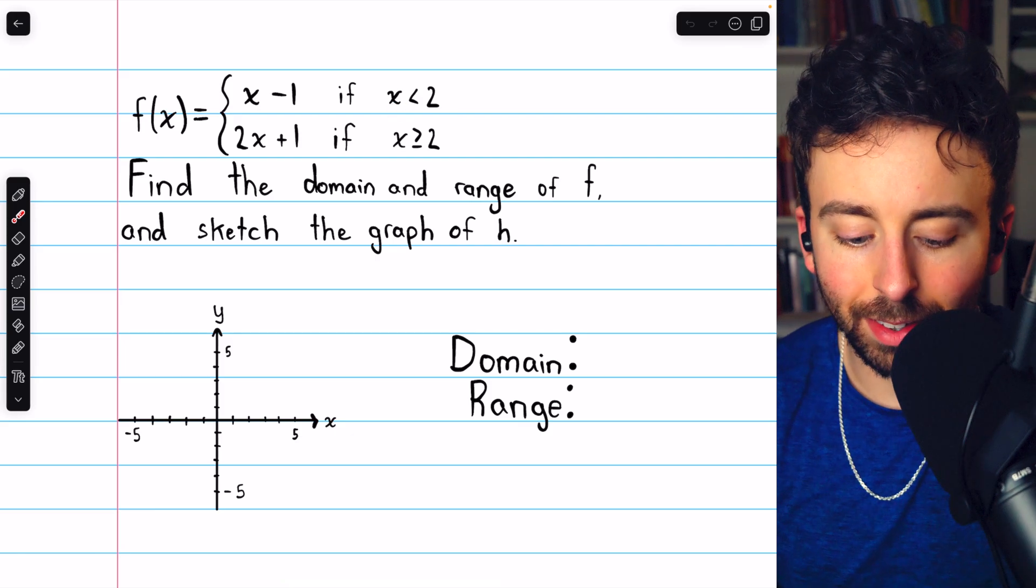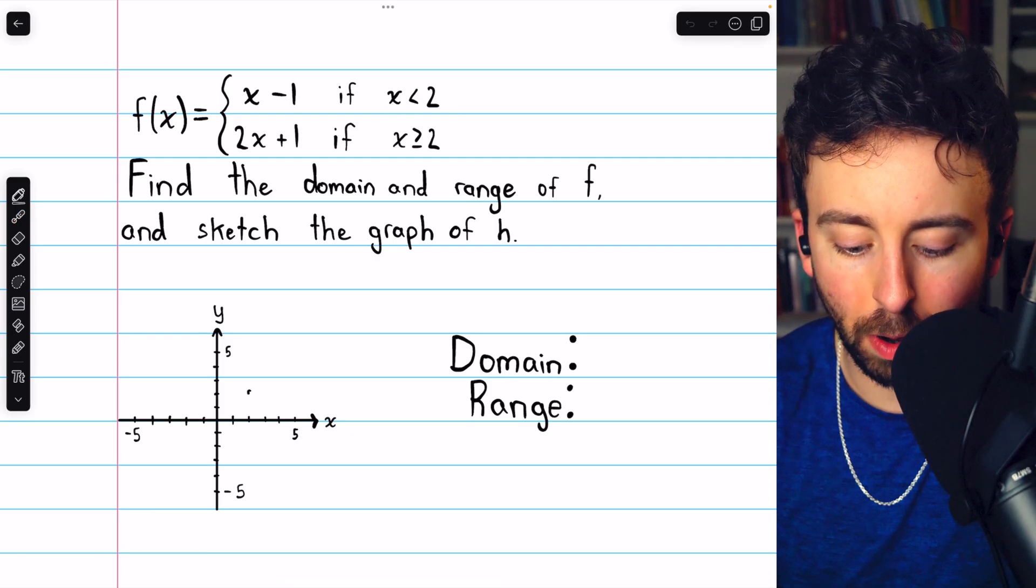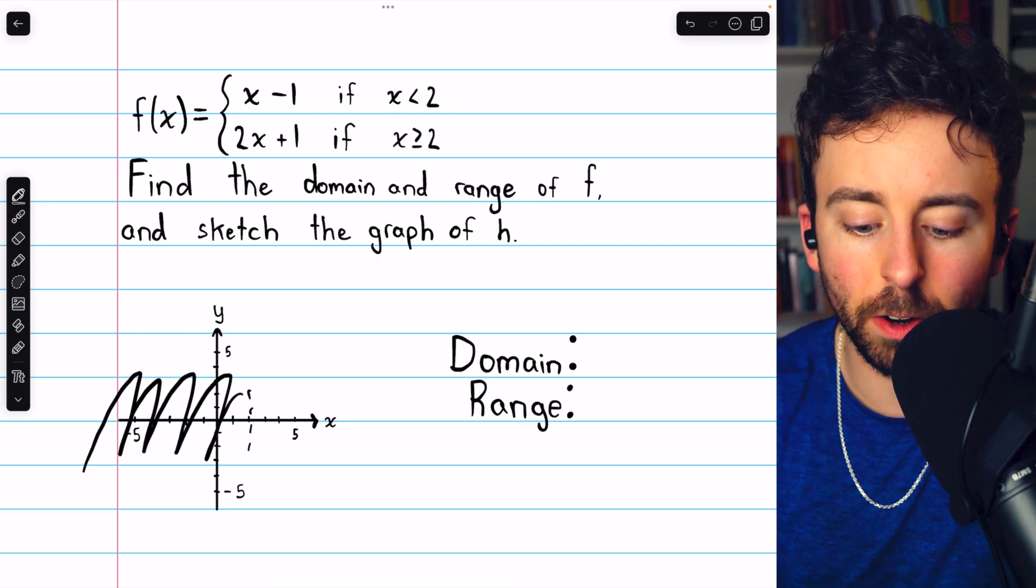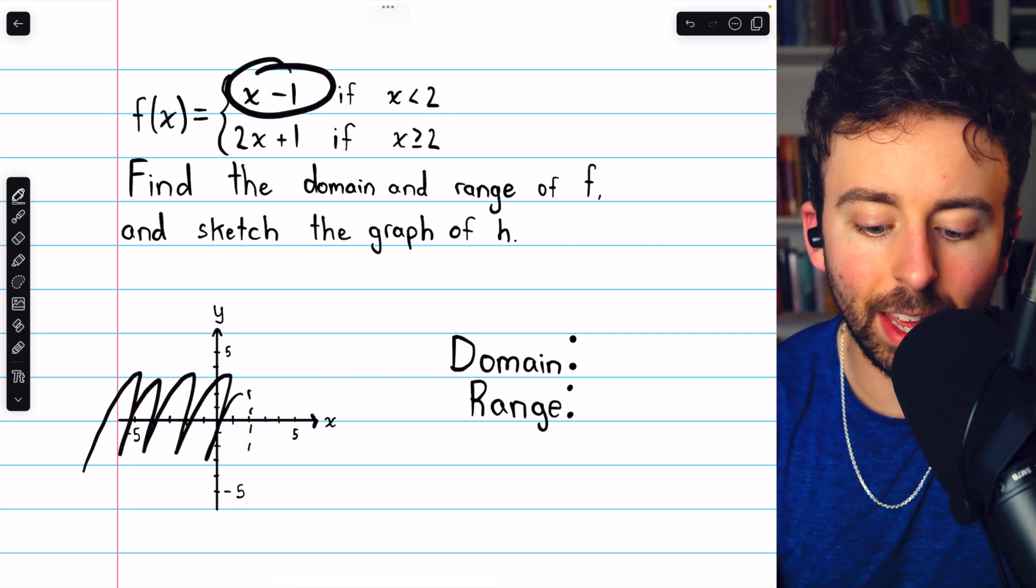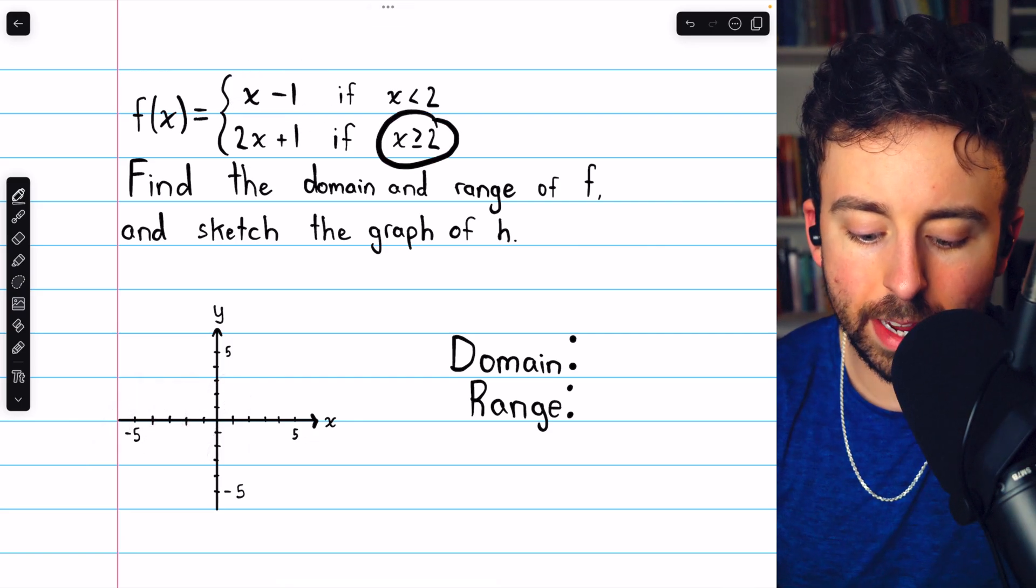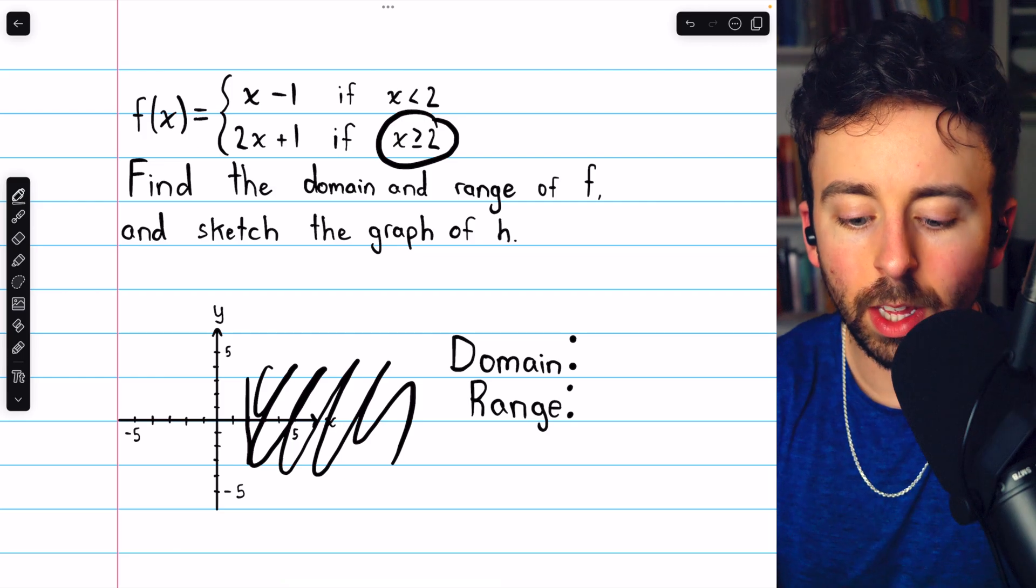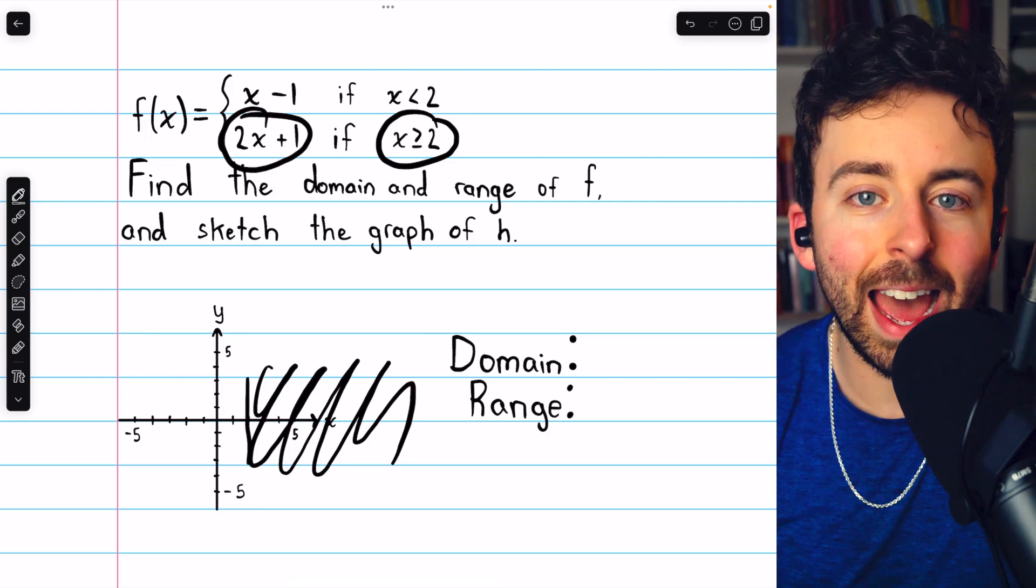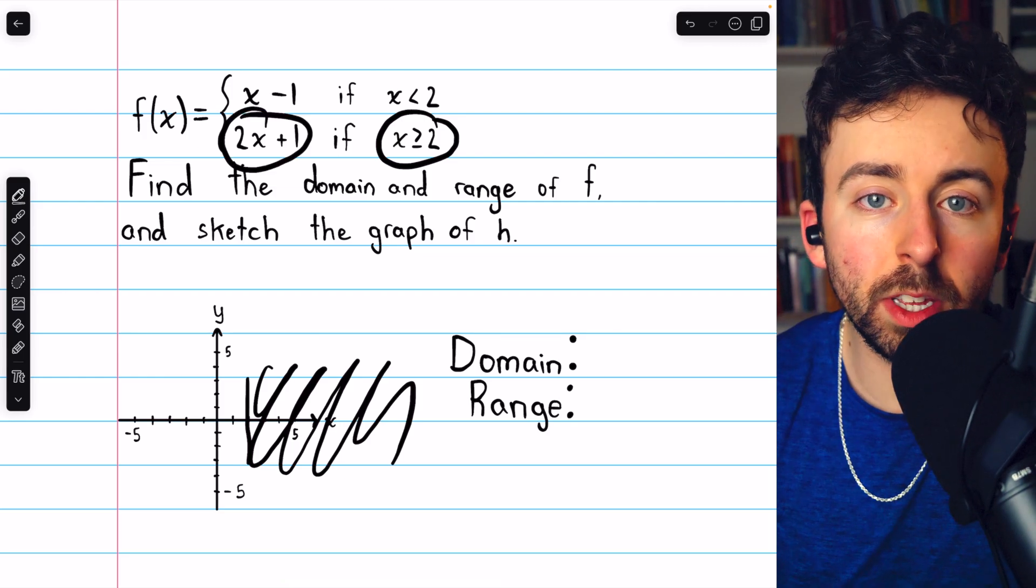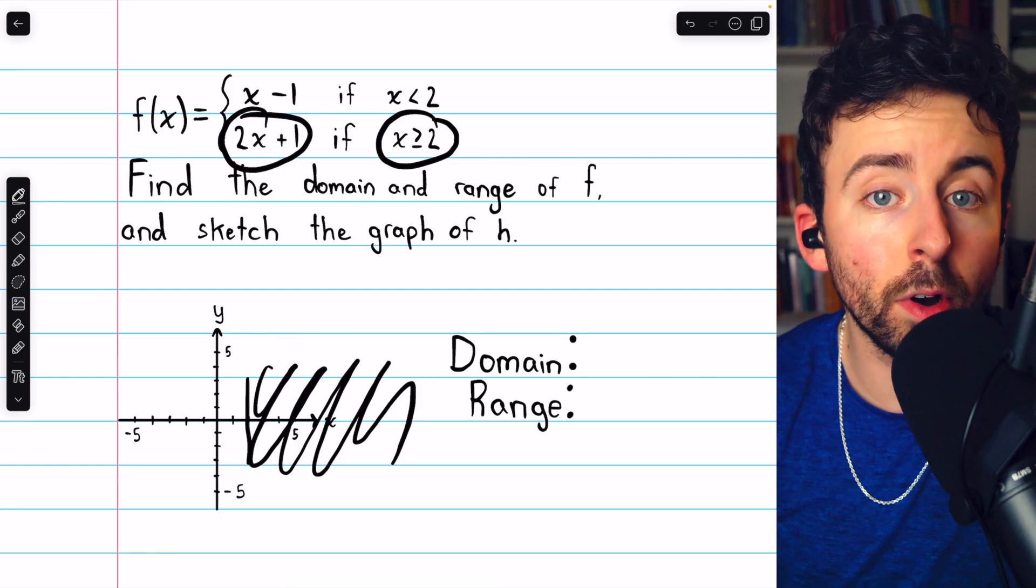In this example, if x is less than 2, which on the graph would be anything over here, then the graph will look like this. But if x is greater than or equal to 2, which is anything over here, then the graph will look like that. So we have to graph each of these pieces separately on their appropriate domains.